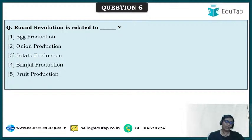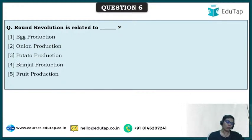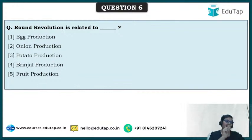Norman E. Borlaug is considered the father of the global green revolution, but the term was first used by William S. Gaud.